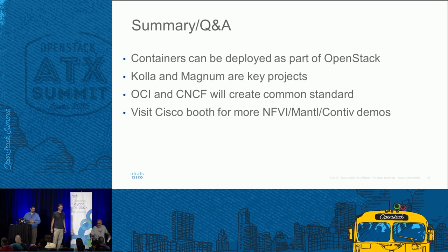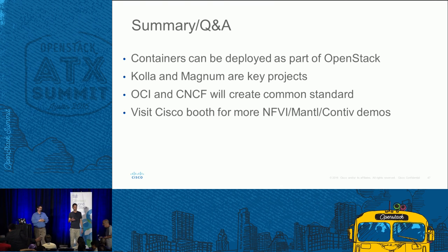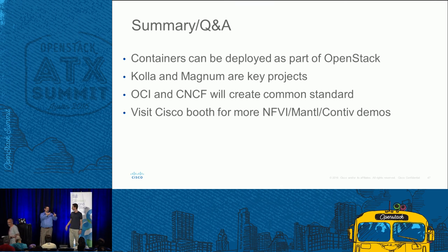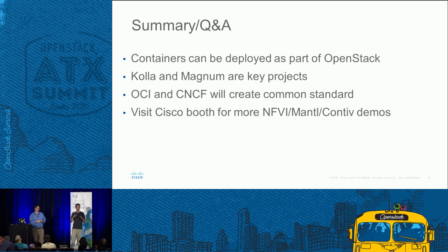Q: How does this interact with ACI? A: The Contiv plugin interacts directly with ACI. If you create your policy in ACI and it sees Contiv, it deploys directly to Contiv. With OpenStack Neutron there are ACI plugins, group-based policy plugins, as well as Nexus VLAN-based plugins including the Nexus 9000.